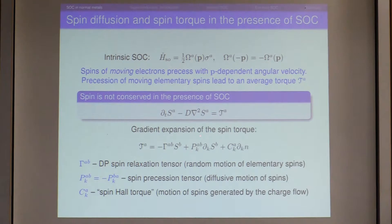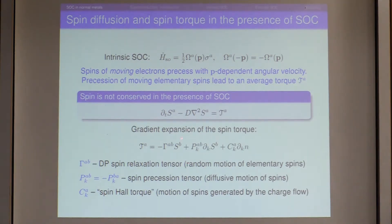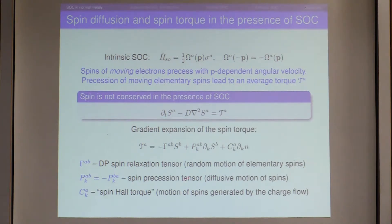The spin relaxation comes from random motion of carriers — the D'yakonov–Perel' mechanism. The term proportional to gradients comes from average motion: if the spin distribution is non-uniform, spins diffuse, move, and precess in the average field — described by the spin precession tensor. Because the system may have a spin Hall effect, non-uniformity of the charge distribution also causes spin motion; since spins move, they precess, producing an additional torque. This is the spin Hall torque, and its coefficient couples spin and charge degrees of freedom.